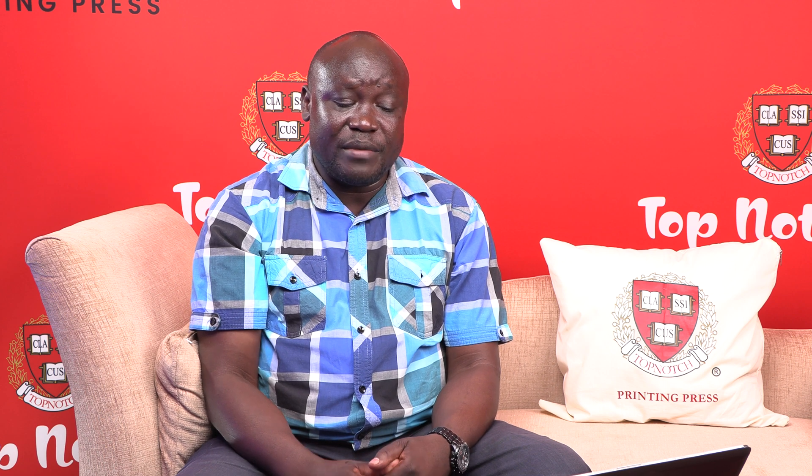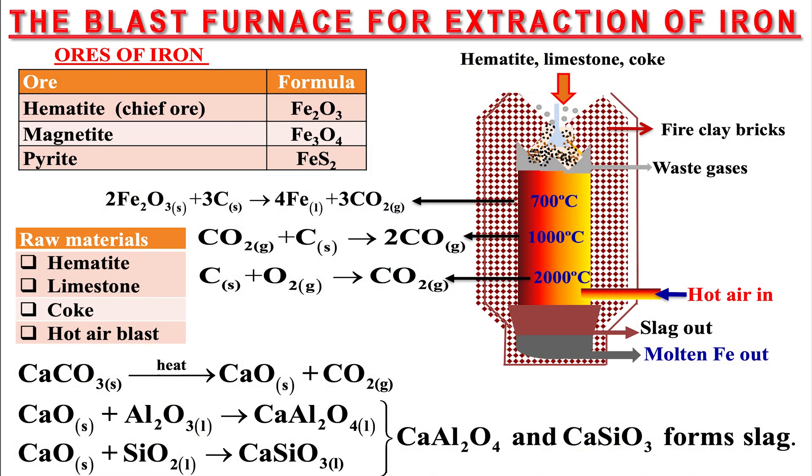The carbon dioxide starts to move up, and as it gets to the middle it meets more incoming coke. When coke is heated it acts as a reducing agent, so the coke reduces the CO₂ to produce carbon monoxide, CO. The reaction in which CO is formed is endothermic, which explains why there is a slight reduction in temperature to around 1000°C. The CO then moves up slightly where it meets the hematite.